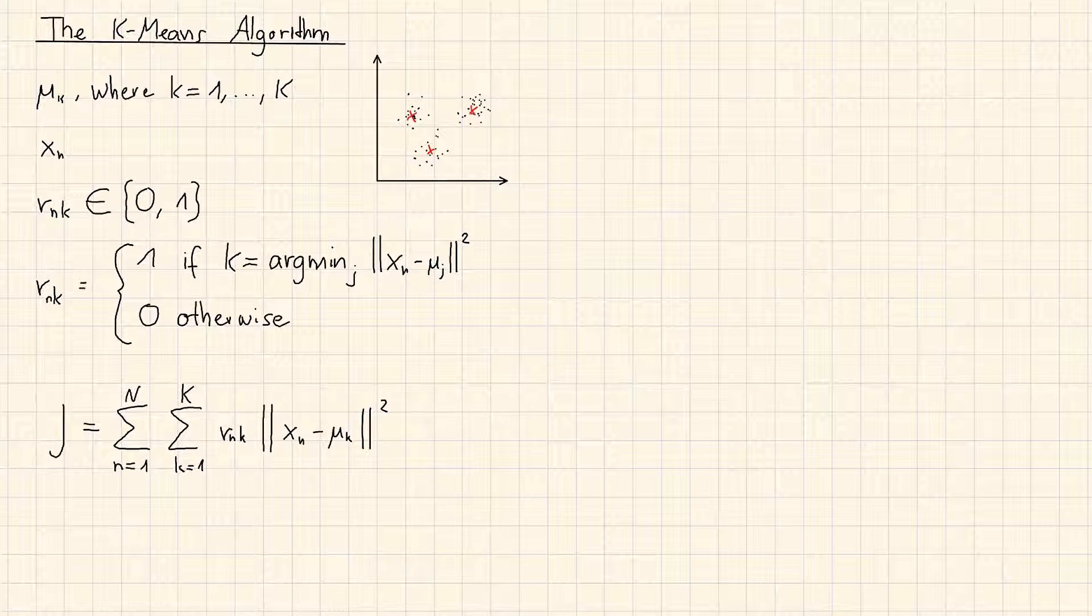Now we have our calculation of rnk, which corresponds to redrawing the separation line or decision boundary of the classes. In this step, µk does not change. It is held fixed.